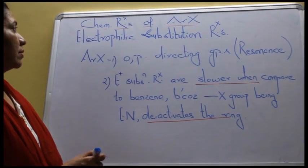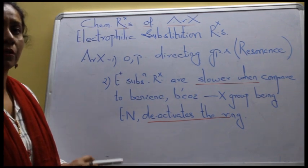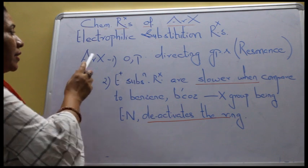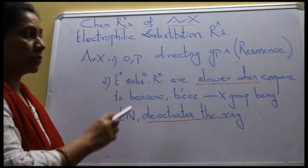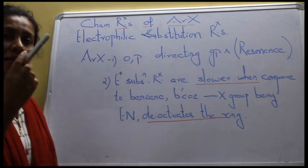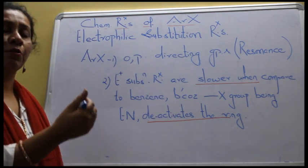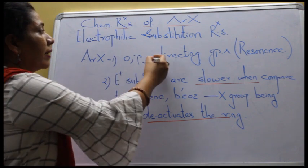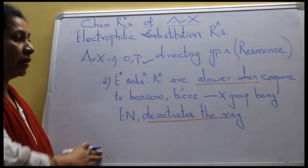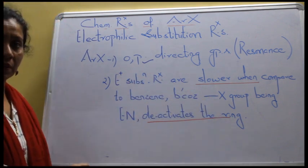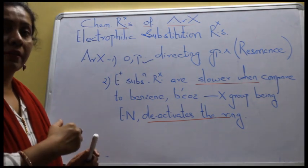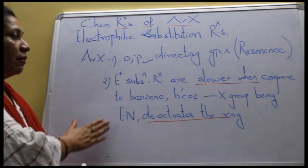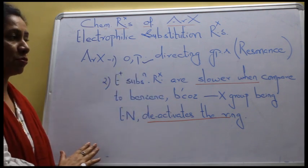The second type of reactions are electrophilic substitution reactions. Haloarines show electrophilic substitution reactions, and substitution takes place at ortho and para positions. That's why halogens are called ortho-para directing groups — as confirmed by the resonance showing electron density at positions 2, 4, and 6, so electrophilic attack occurs at 2, 4, and 6. The second important point is that halogen has an electronegative character, meaning it pulls electrons from the ring, making the benzene ring deactivated. Therefore, drastic conditions are required for haloarines to undergo electrophilic substitution reactions.